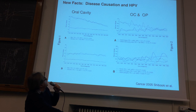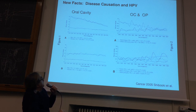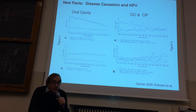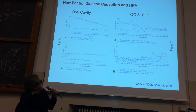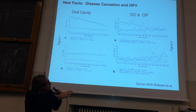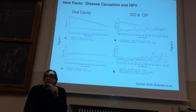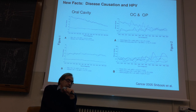Mentre nel cavo orale assistiamo a una riduzione dell'incidenza, vera in particolare per gli uomini e meno per le donne, al contrario nell'orofaringe, nella tonsilla e nella base della lingua, abbiamo un trend di aumento dell'incidenza, sempre a carico degli uomini.